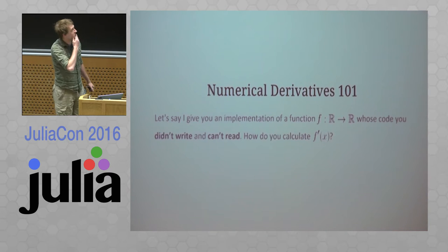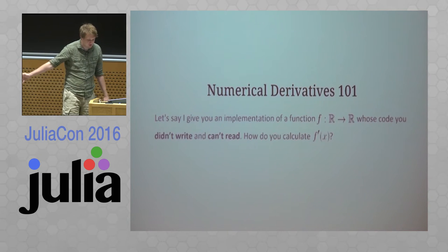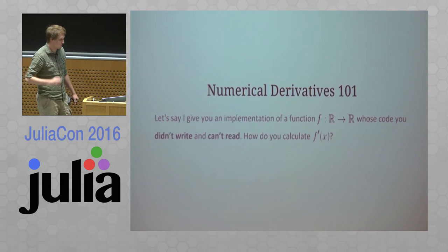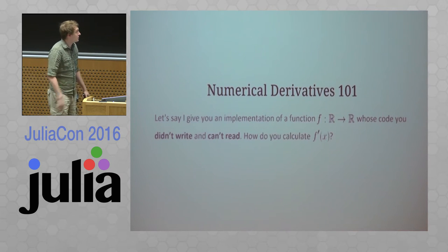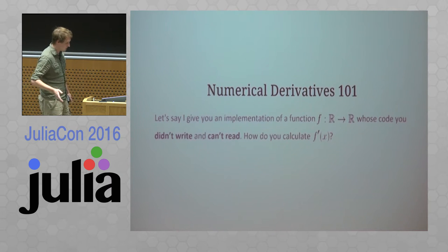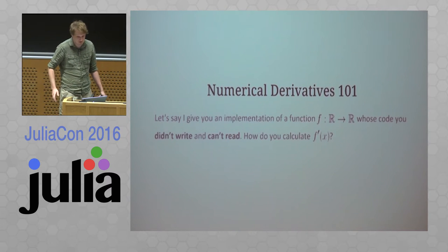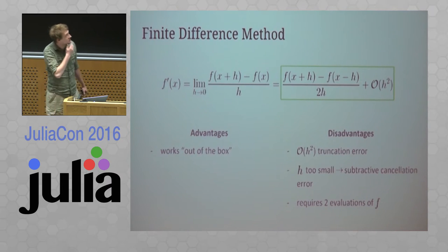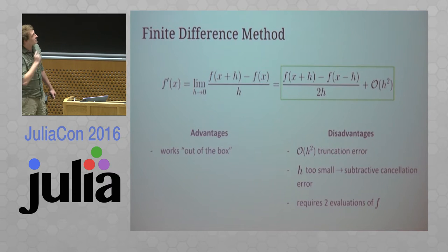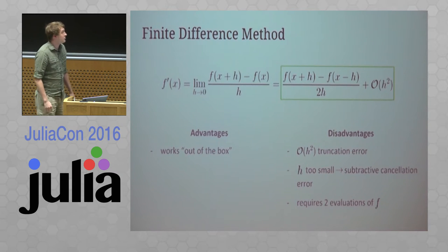We kind of start off with an example. Let's say your coworker gave you some code, or maybe you wrote code a couple months ago and you can't even read it — it's really ugly. But you do know it's an implementation of a scalar function and it's probably differentiable. So you want to take the derivative. How would you do it? Well, you might say: I know calculus — there's a limit definition of a derivative and I can utilize this to take an approximation. That would be a pretty common idea, and maybe even a common mistake.